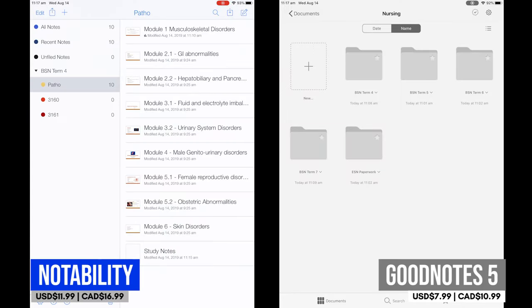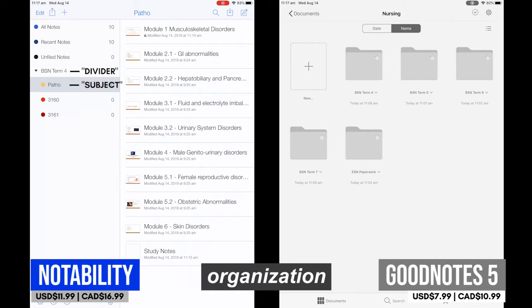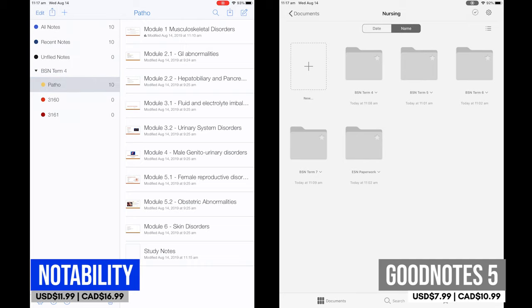In terms of organization systems, Notability's organization involves dividers and subjects. The way I would suggest you organize your files is to have one divider per semester and one subject per course. Now I will say that their organization system pales in comparison to other note-taking apps because you don't have the ability to continue sorting your files past these two levels. Of course, this is a personal preference thing.